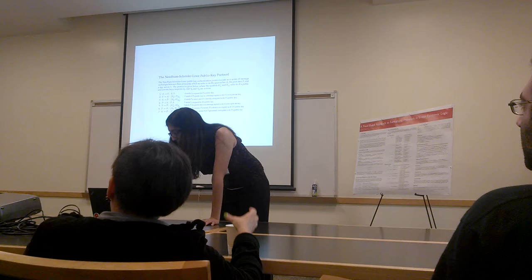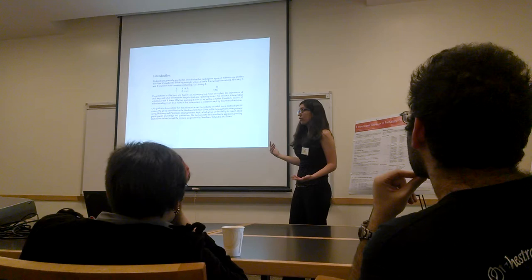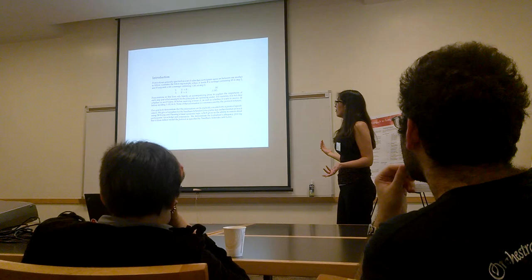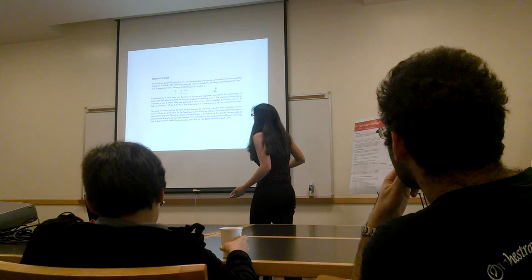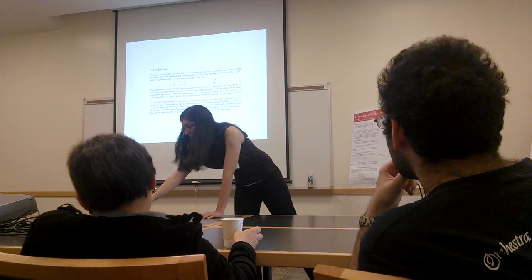In general, protocols are given as a set of steps that principals follow in order to accomplish a goal — where A sends a message to B containing M, and B sends a message that is a function of M. There is no information telling us that B didn't just guess M out of the blue. There's nothing encoding the dependency between steps. So what we want to do is formalize this dependency using linear epistemic logic.